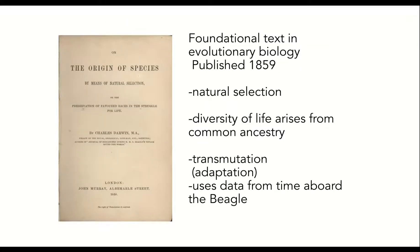On the Origin of Species is Darwin's most famous book, and arguably one of the most influential books of all time. When it was published, it sold out immediately, and by the end of his life, his theory of evolution was generally accepted. This book lays out his most important theoretical conclusions, including the idea that all life shares common ancestry, that species change over time through adaptation — or what he called transmutation — and he relied heavily on specimens and observations collected while traveling aboard the Beagle.